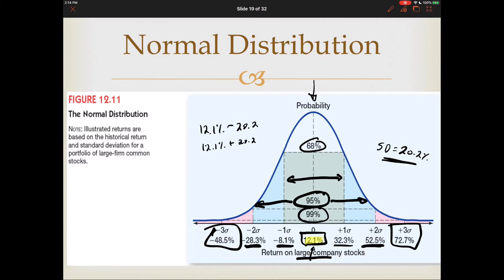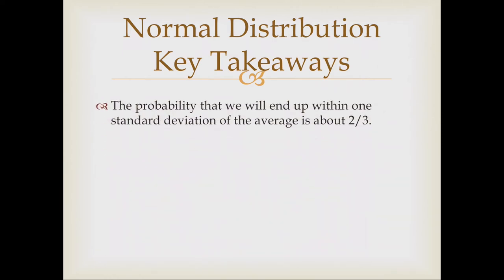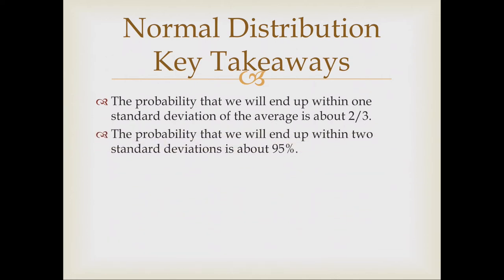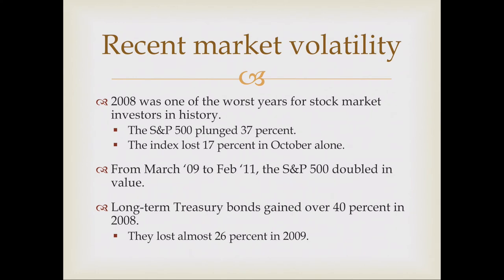So far we've calculated the mean by adding individual inputs and dividing by the number of inputs — a simple arithmetic average. The probability of ending within one standard deviation is about 68%, within two standard deviations is 95%, and within three is 99%. As an example of market volatility: in 2008, the S&P 500 plunged 37%, losing 17% in October alone. From March 2009, the S&P actually doubled in value. Long-term treasury bonds gained over 40% in 2008 and then lost 26% in 2009. It is important to understand you are taking on risk when investing.